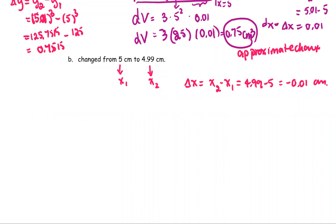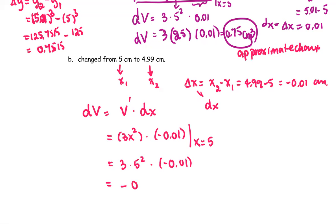So to approximate the change in volume by using the differential is the derivative V prime times dx. And again, the delta x is dx. The V prime is 3x squared, multiply by dx, which is negative 0.01. Compute at the first x, which is x equals 5. Then we get 3 times 5 squared, multiply by negative 0.01, and the number is negative 0.75, unit is cubic centimeter.